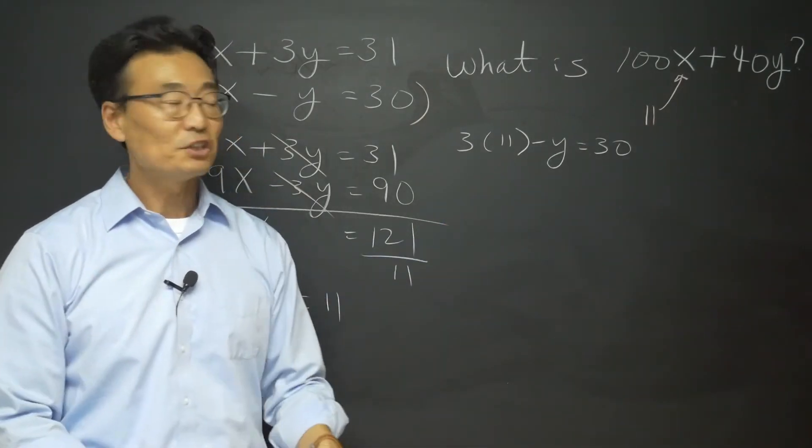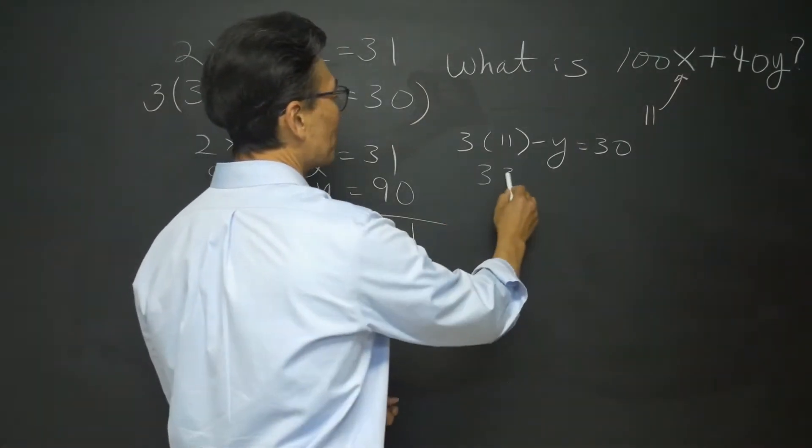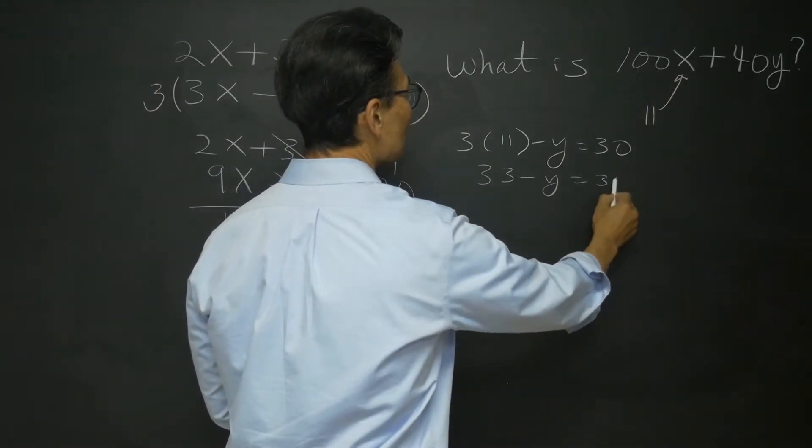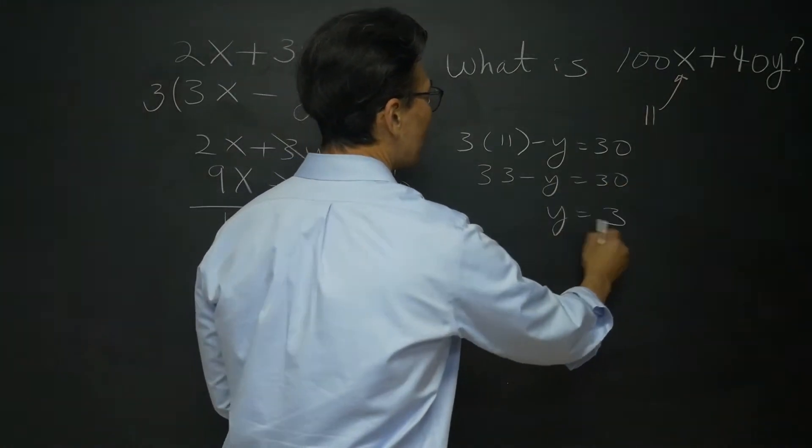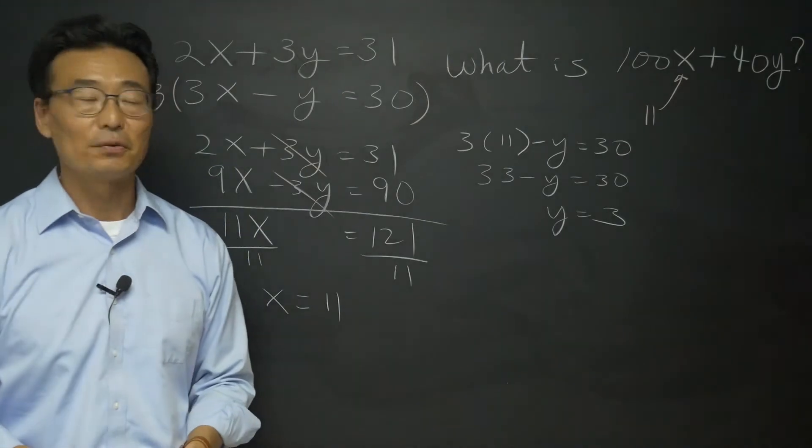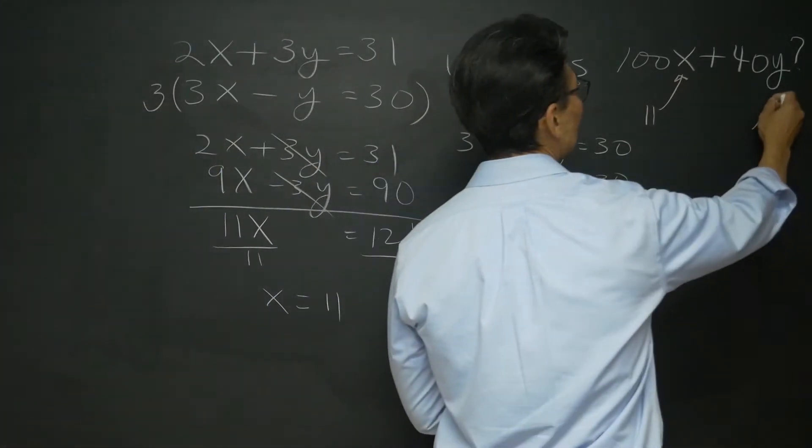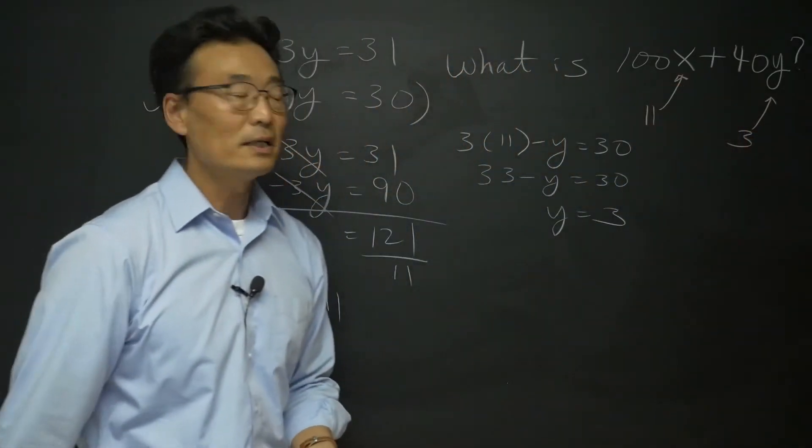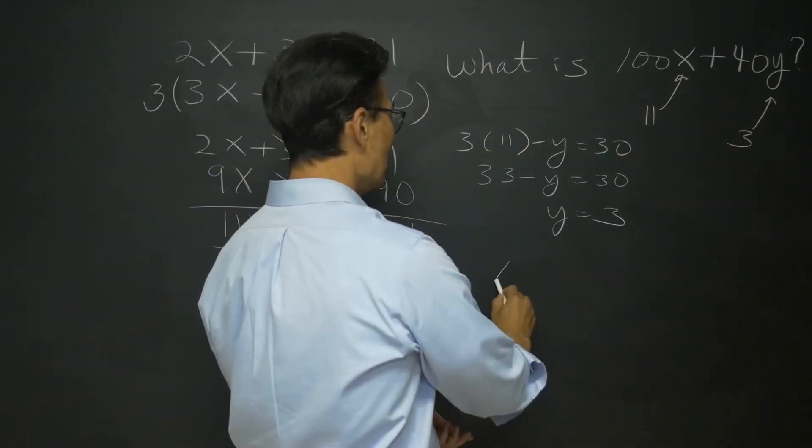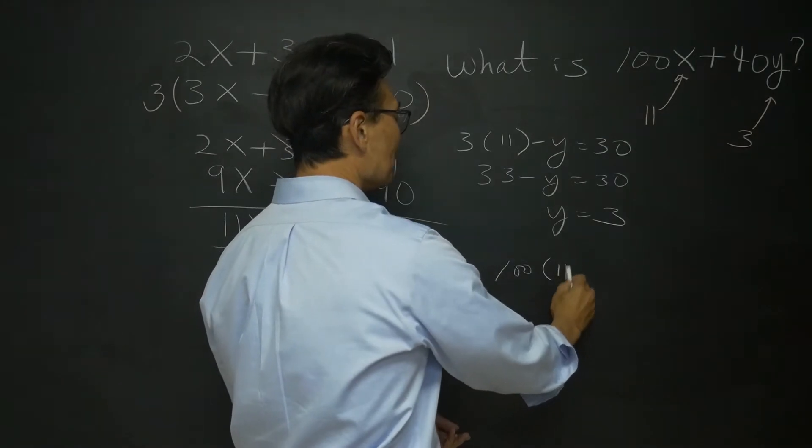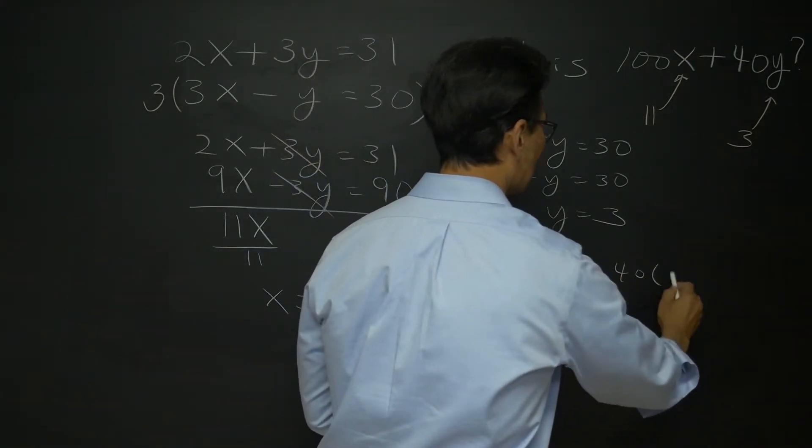So I have 33 minus y equals 30, or y is equal to 3. All we have to do now is take the 3, plug it into y.